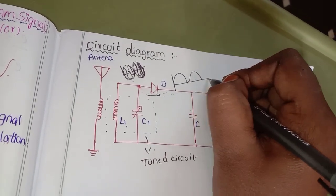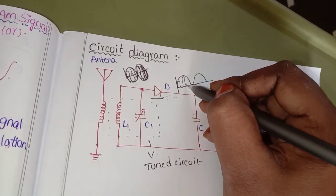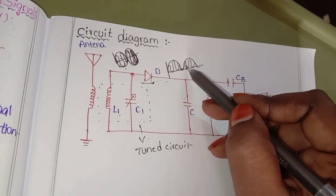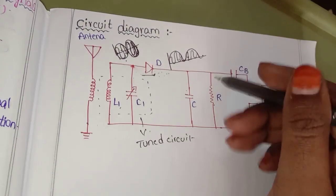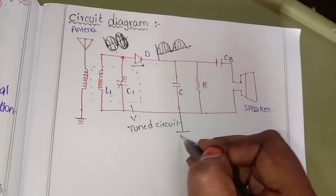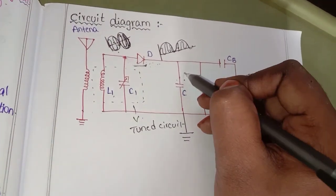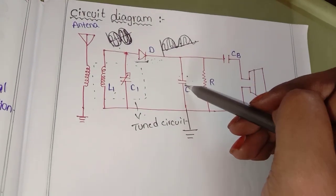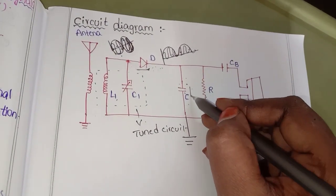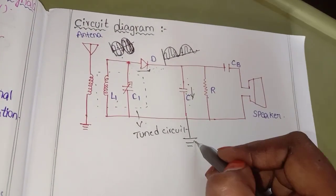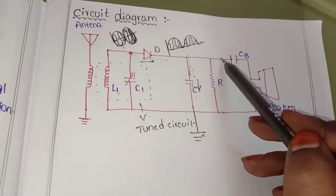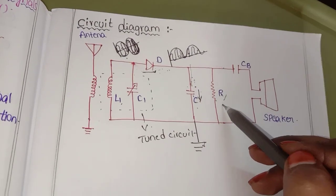The diode will reject the negative half cycles. The capacitor rejects the high frequency component. The low frequency will be passed by the capacitor, which continues to connect with the carrier signals. The capacitor allows the carrier signal to go to ground. The message signal is developed across the resistor.